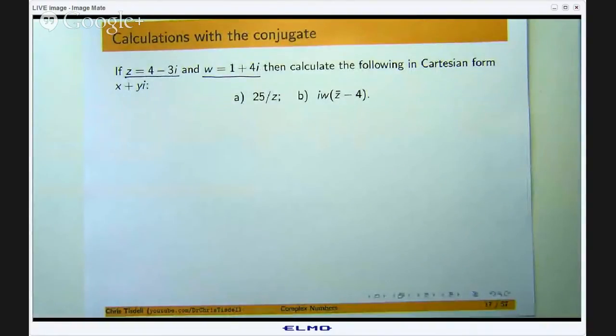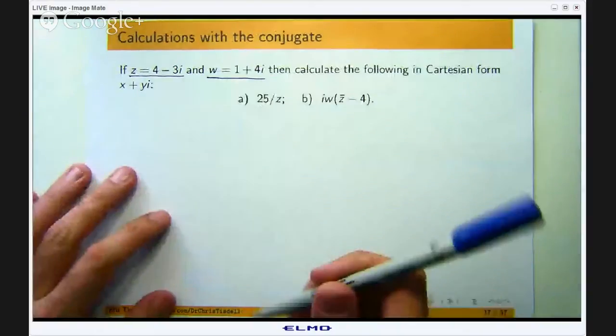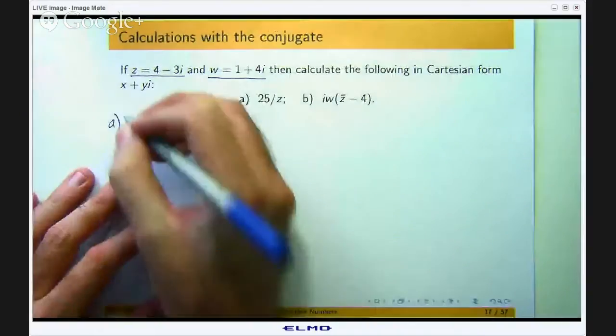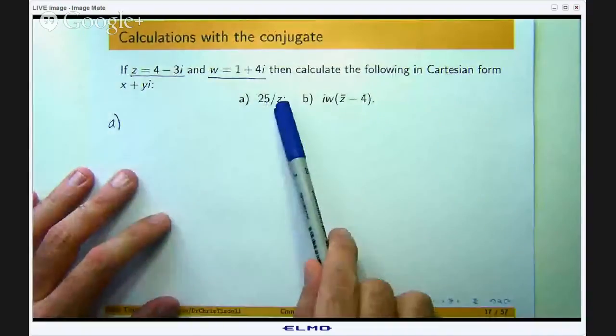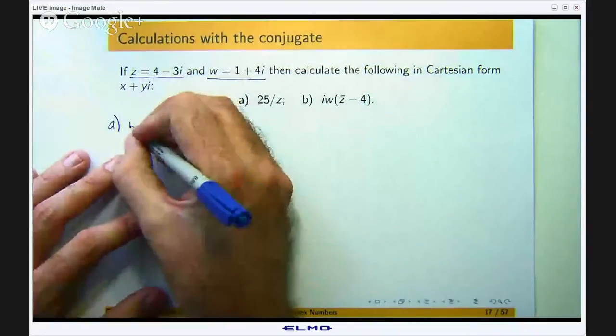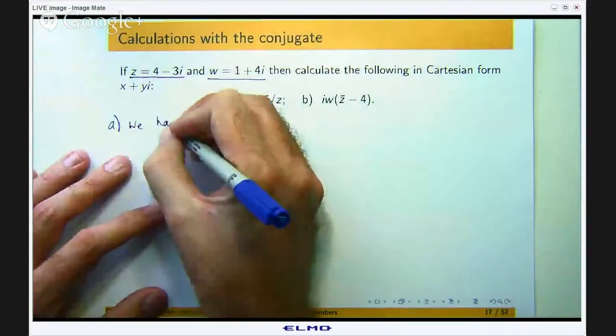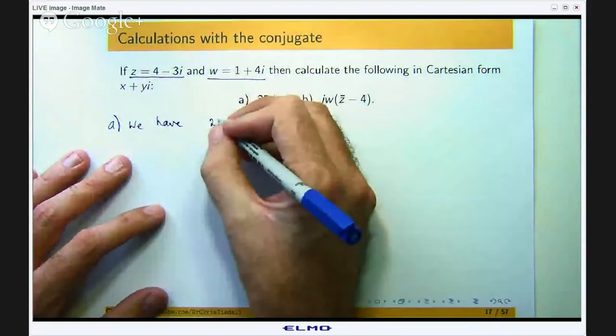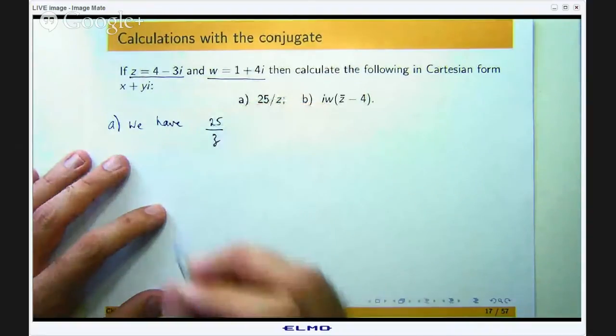And we will employ some of those in today's example. So let us look at the first part of the example. Here I am actually dividing a real number by a complex number. So let us see if we can simplify that. 25 over Z.